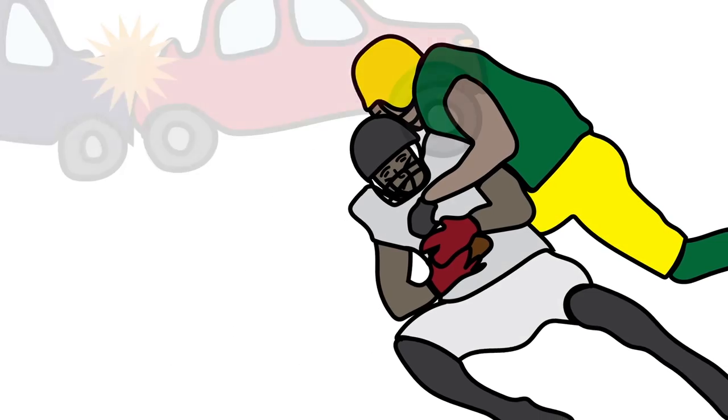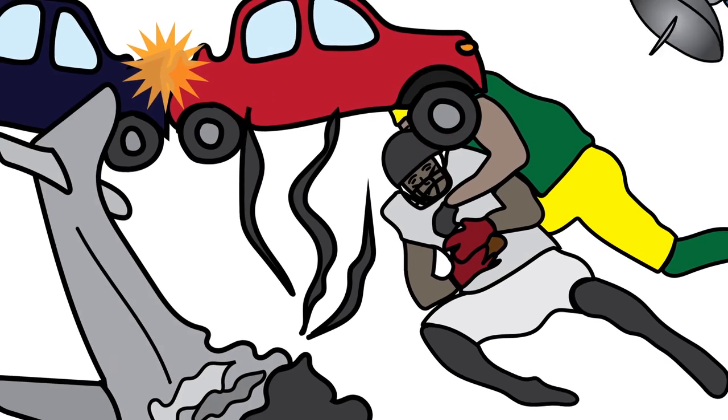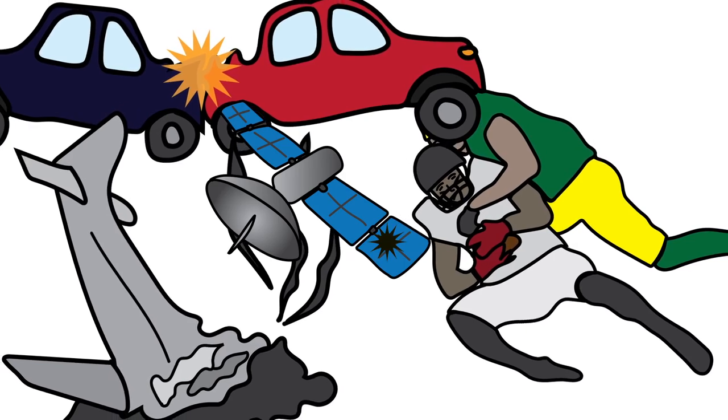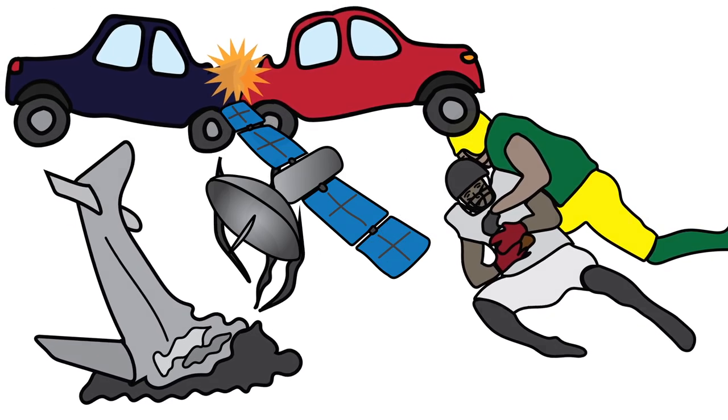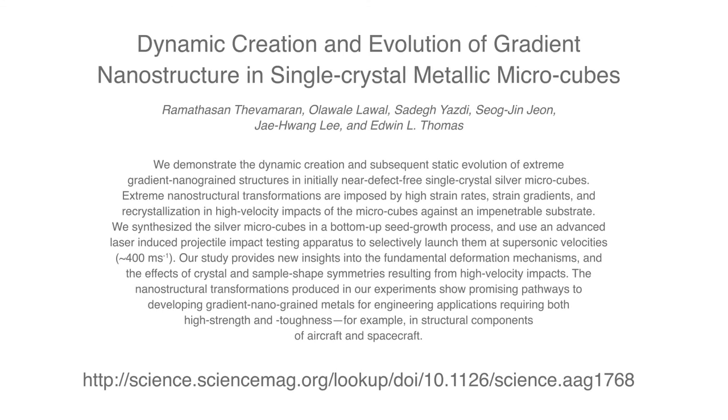Sport-related collisions, automobile and aircraft crashes, and micrometeorite spacecraft collisions are only a few of the many extreme situations where gradient nanograined metals can have a real impact.